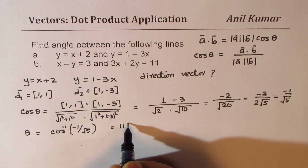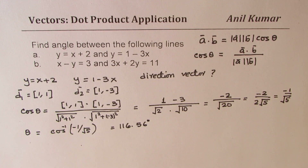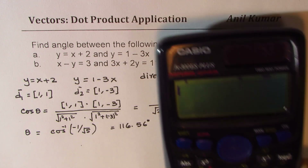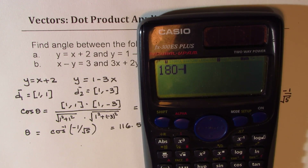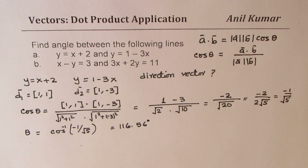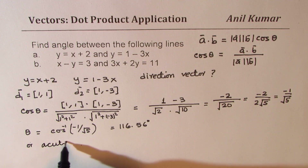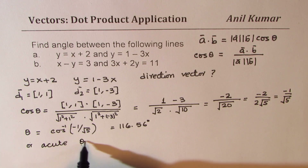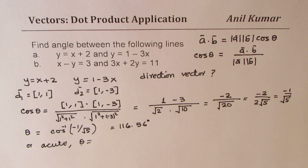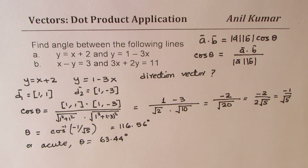That gives you 116.56 degrees, which is the obtuse angle. We can always find the acute angle by subtracting from 180 degrees. So 180 minus 116.56 gives us 63.44 degrees in decimals. The acute angle is equal to 63.44 degrees. That is how we could actually find the angle between the lines.